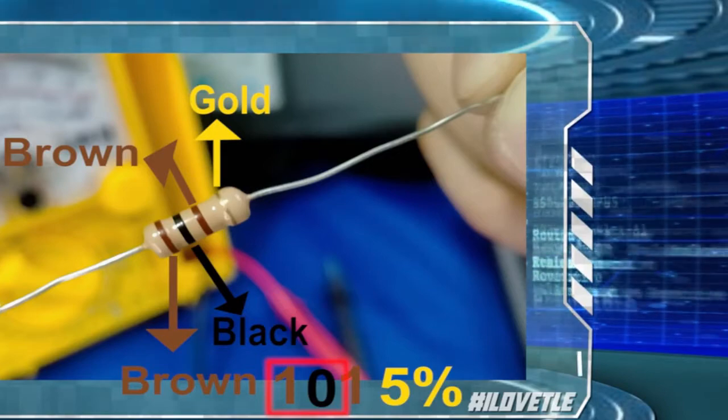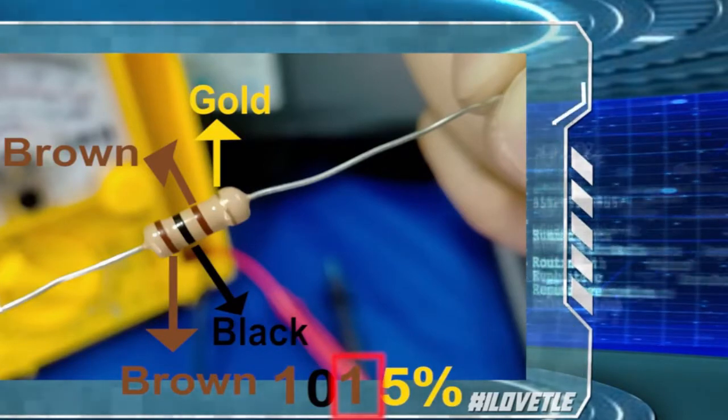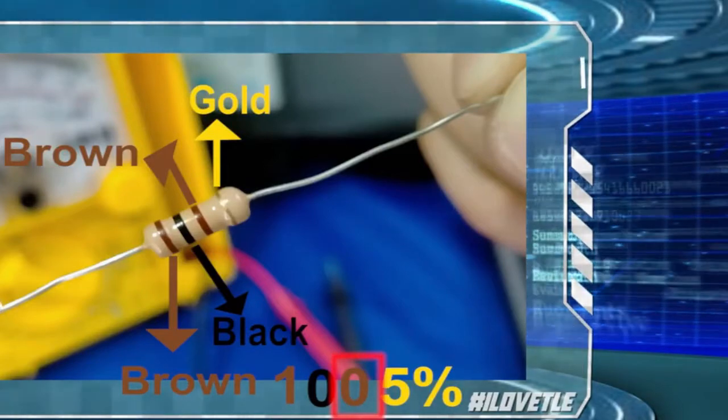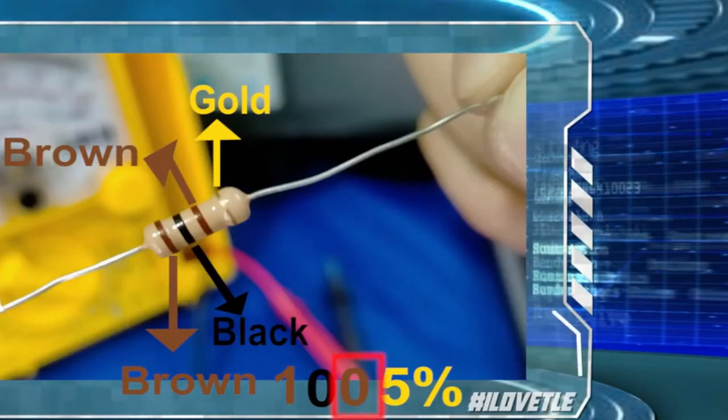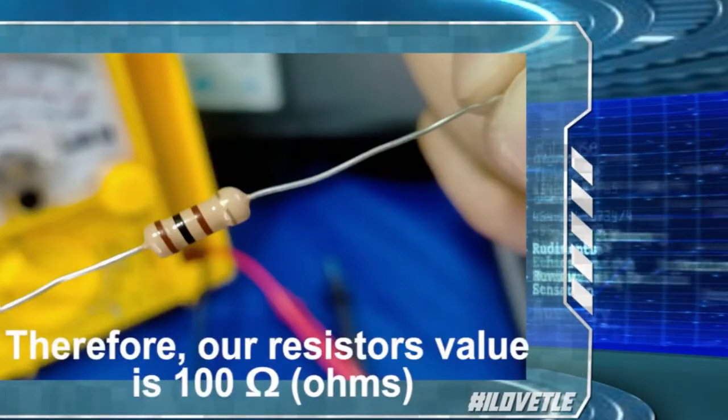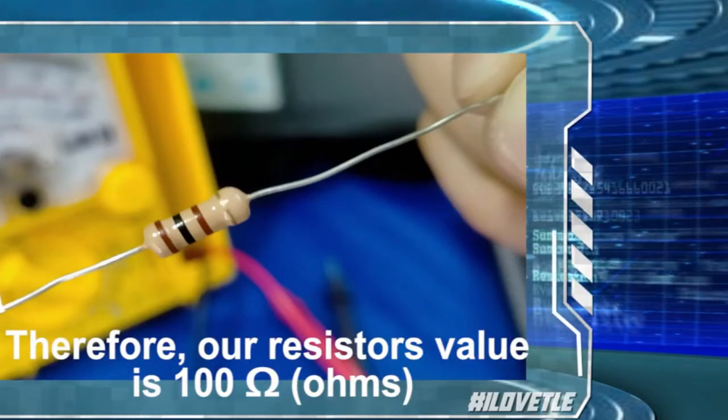The easier way to read that value is just to keep the first two values the same. We know that our multiplier is 1. Let us convert that 1 into 1, 0. If our multiplier is 2, just convert that into 2 zeros. Therefore, our resistor's value is 100 ohms.